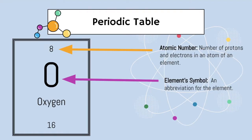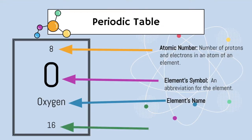Let's take silver. Silver is Ag. Why is silver Ag? Well, in most cases the S has already been taken, and Ag is the abbreviation for the Latin word for silver. So that's kind of cool. The element's name — oxygen — will always be right under the symbol on most periodic tables. And then the last number on the periodic table is the atomic mass, which is the number of protons plus neutrons.